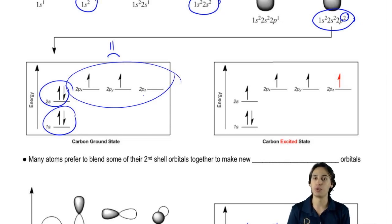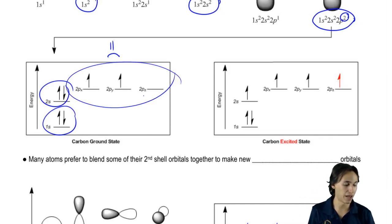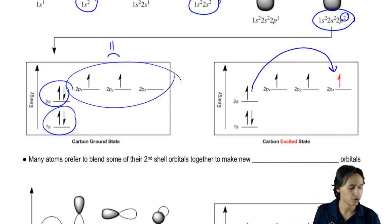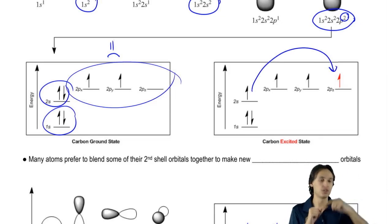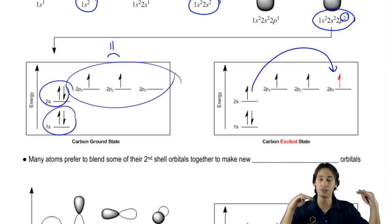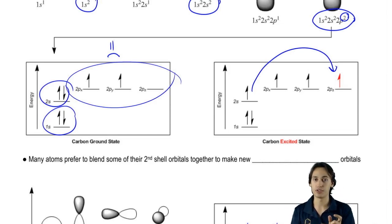So what carbon actually winds up doing is it winds up exciting one electron up into one of the p orbitals. So what that does is it actually violates the Aufbau principle and it takes one electron from my 2s orbital and it excites it to one of the two p orbitals. So now what I wind up getting is that instead of having one full orbital of lower energy and then three orbitals that kind of just suck, what winds up happening is that I wind up getting four orbitals of higher energy that all are partially filled.